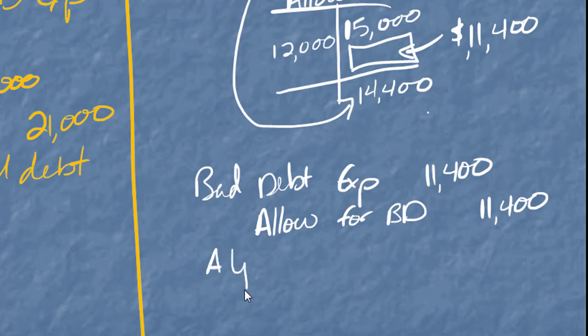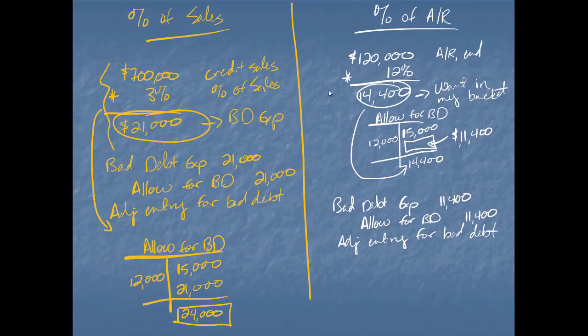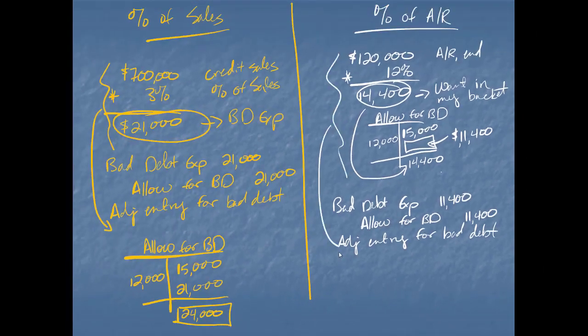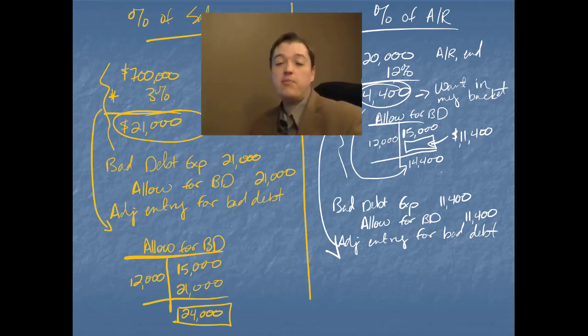And again, I would include all of these details down here. Now you can see very different balances. The percent of sales method gives me about $24,000. The percent of accounts receivable only $14,400.